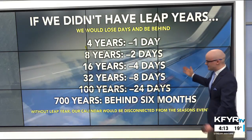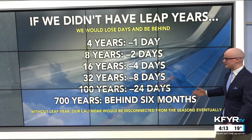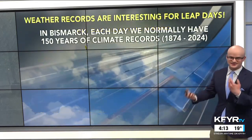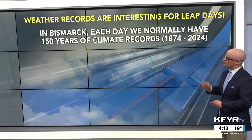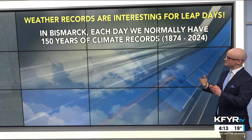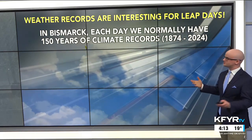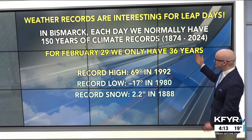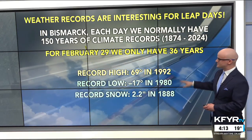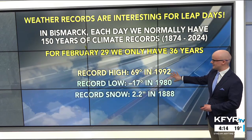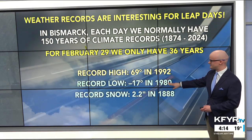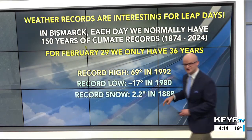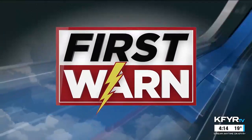So it's interesting how we had to chop off those days to get back on track using the Gregorian calendar, which is what we use today — the most accurate one with the hopscotch leap year rule. If we didn't have the leap year, 700 years from now we would be behind by six months, which would really throw things off with holidays and the seasons. One last note: weather records are interesting for leap days. In Bismarck, each day normally has 150 years of climate records going back to 1874. But for February 29th, we only have 36 years — divide that 150 by four. The record high for tomorrow is 69°, set back in 1992. Record low is minus 17°.